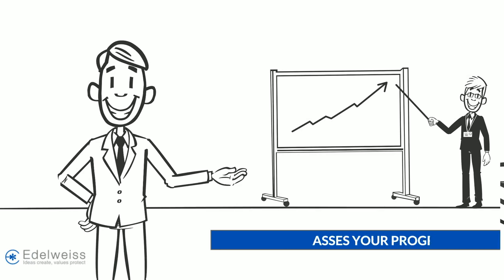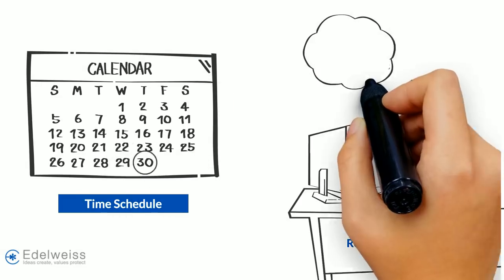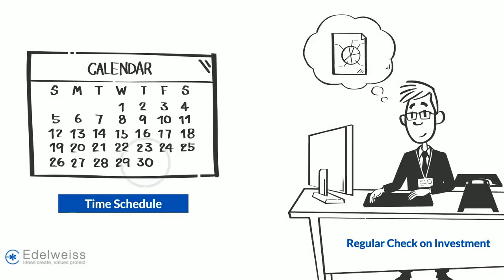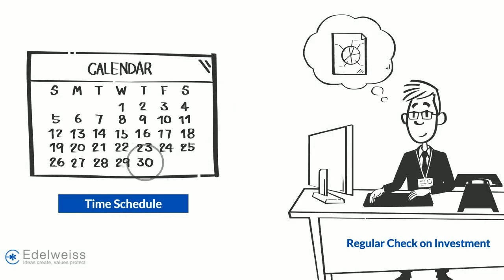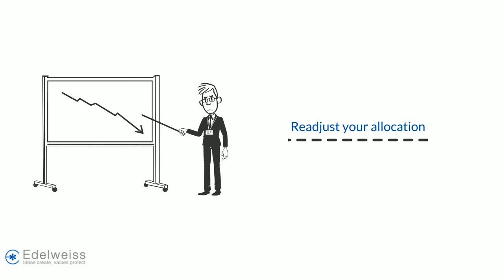Step five: assess your progress. Fix a time schedule and maintain a regular check on your investments. Readjust your allocation if the portfolio is not progressing as planned.